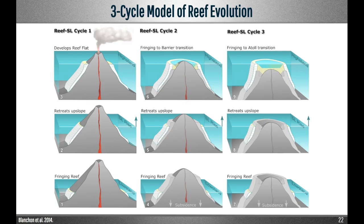We propose that these findings can be resolved by a three-cycle model of reef evolution, showing how reefs developed during three cycles of sea level rise and fall around a slowly subsiding volcanic island. It explains all of the new findings from Tahiti, explains how and why fringing reefs transform into barrier reefs, and finally solves the origin of Darwin's reef types. Let's go through it one cycle at a time.